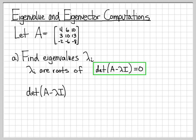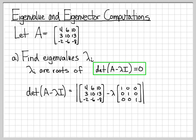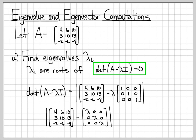We need to compute this specifically for our example: the determinant of A minus lambda I. Here is our matrix A, and here is lambda times the identity matrix I. We use vertical lines to indicate the determinant — that's common notation. After we subtract lambda times the identity from A, we get the matrix with entries 4−λ, 6, 10 in the first row; 3, 10−λ, 13 in the second row; and −2, −6, −8−λ in the third row.